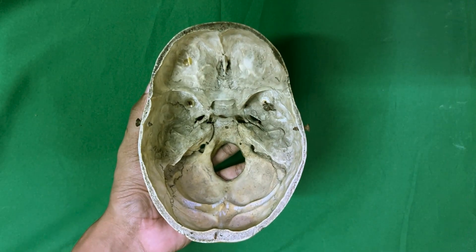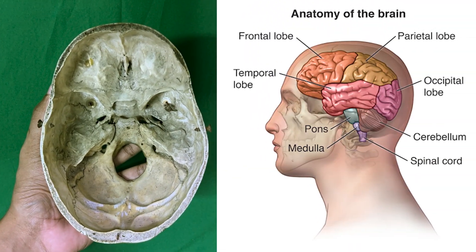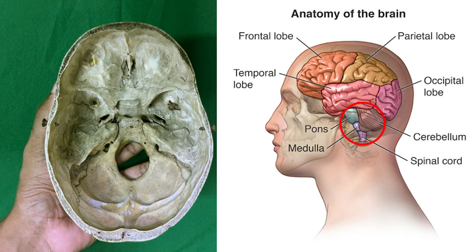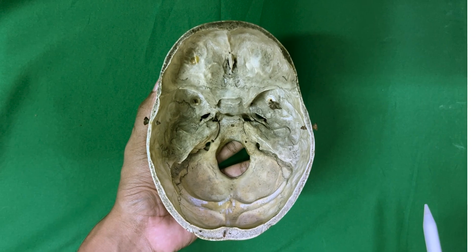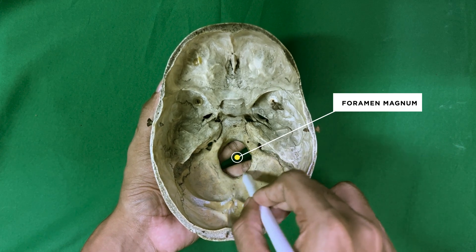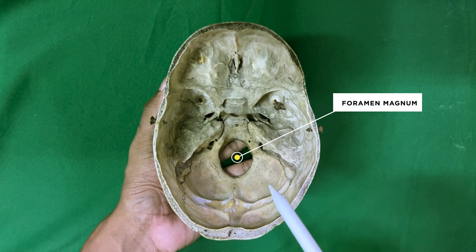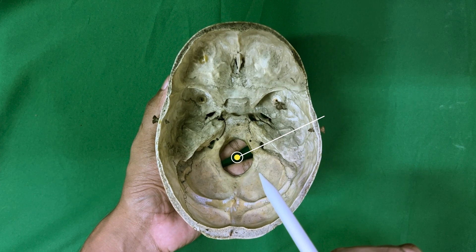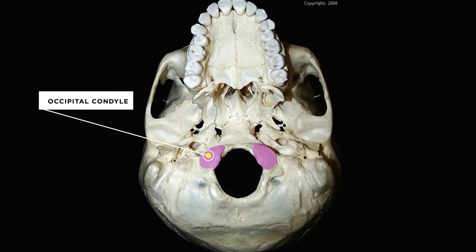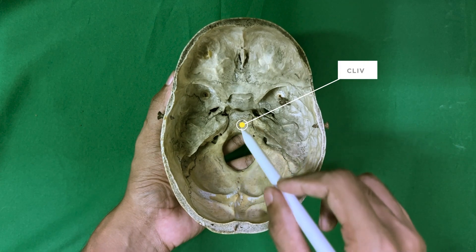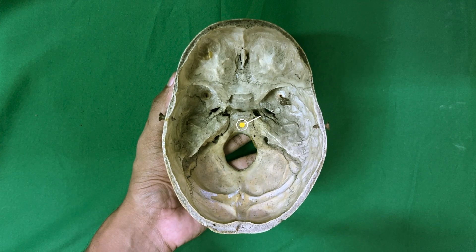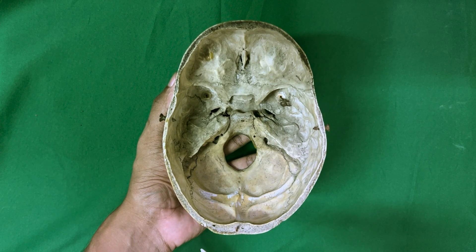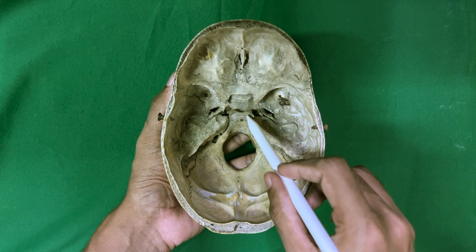It lodges the convexities of the cerebellar hemispheres as well as the pons and the medulla oblongata. The foramen magnum lies in the floor of the fossa. The anterior part of the foramen is overlapped by the occipital condyles. The clivus is the sloping surface in front of the foramen magnum. It is formed by the fusion of the posterior part of the body of the sphenoid and the basiocciput.